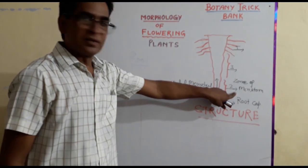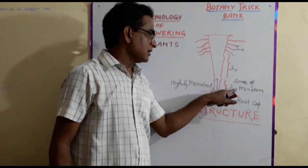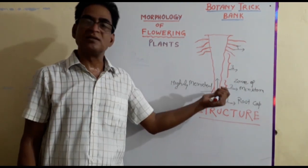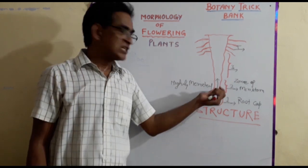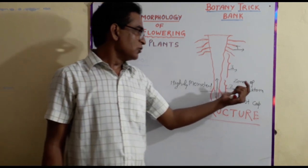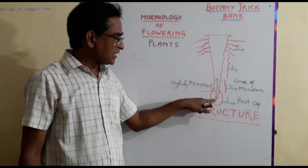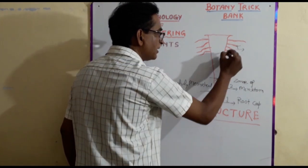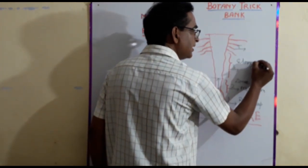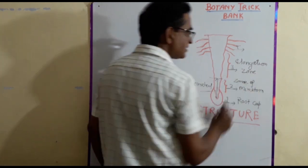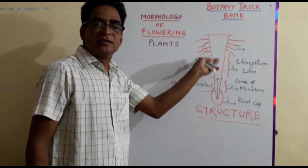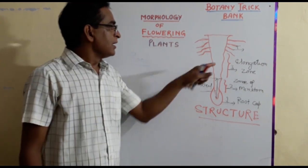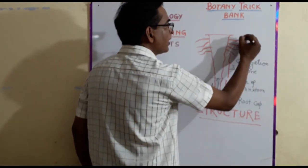The meristematic zone, or zone of meristem — the cells here have all meristematic properties: thin wall, dense cytoplasm, small or no vacuoles, and no intercellular spaces, which are features of meristematic tissue. This zone extends up to a few centimeters from the tip of the root. Above that, the third part is called the elongation zone. Due to meristematic activity, the cells in this area get elongated and push the root downward, forming the zone of elongation. Above that is the fourth part — the maturation zone.